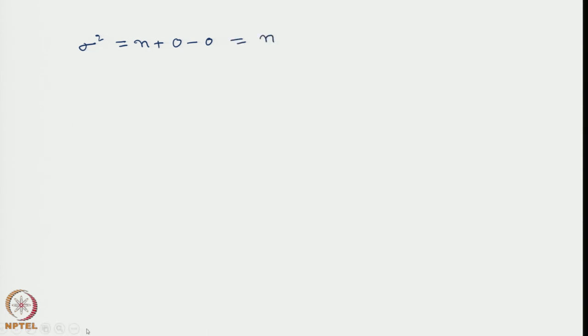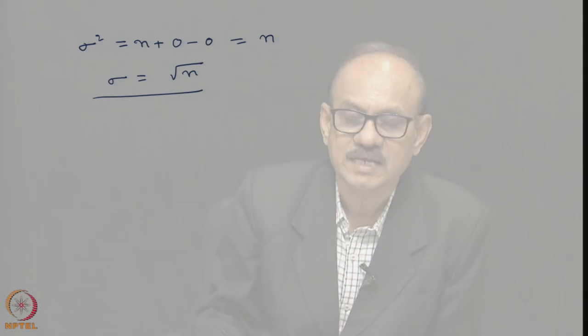Hence the standard deviation is proportional to root n. We should remember that earlier we obtained this result without complete knowledge of the distribution - by a methodology used for deriving the central limit theorem. So one can obtain the standard deviation without having to derive the full random walk distribution. We are only reconfirming that such analysis is consistent with the detailed occupancy probability we have evolved.